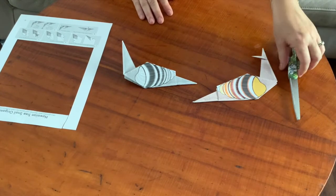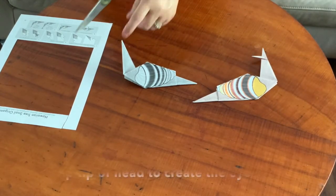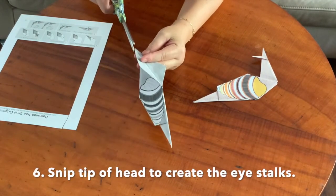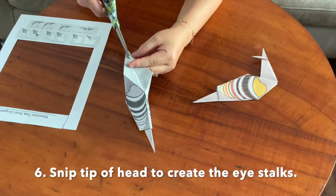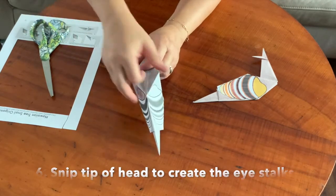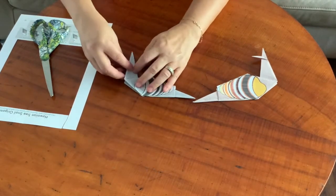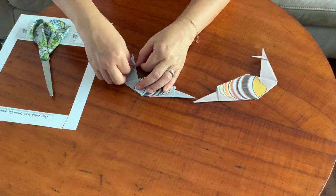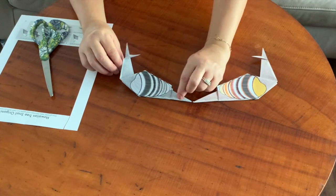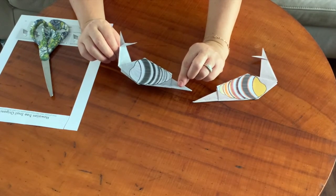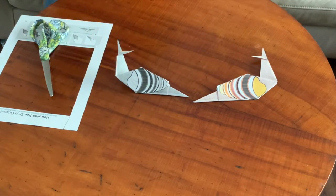The last part is take your scissors and then just kind of open up that head and snip it down maybe about an inch so that you can open up the little eye stalks. And there it is, you have your Hawaiian tree snail.